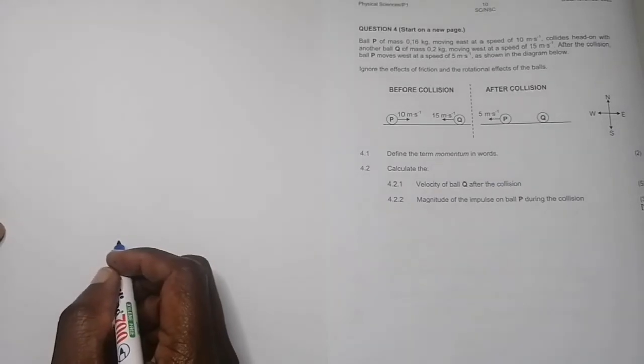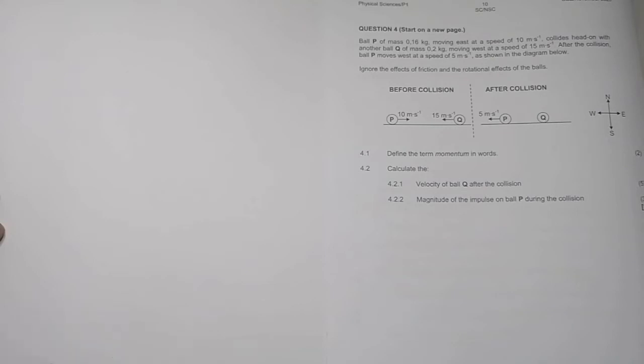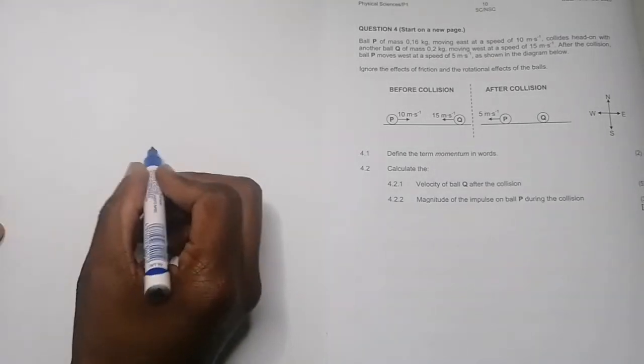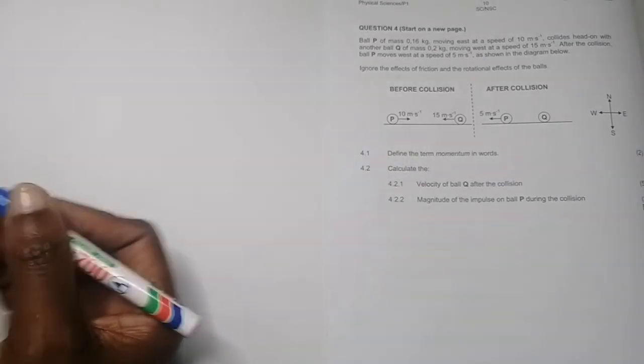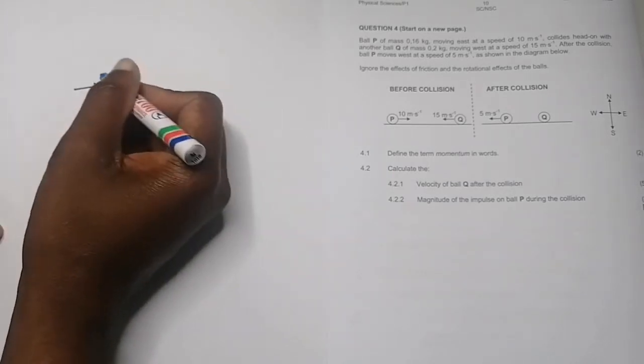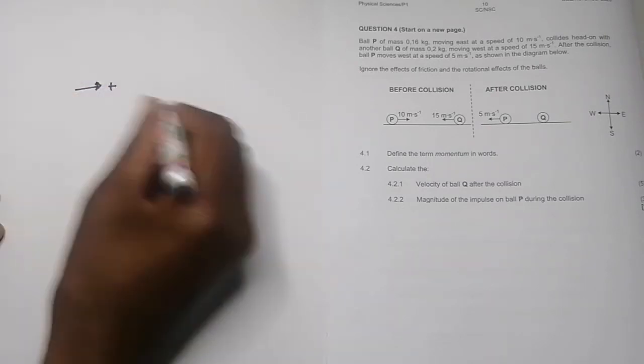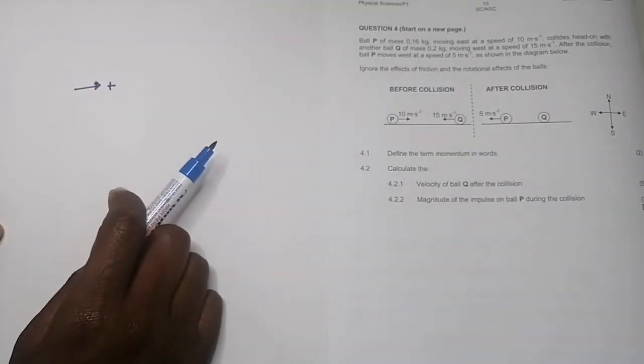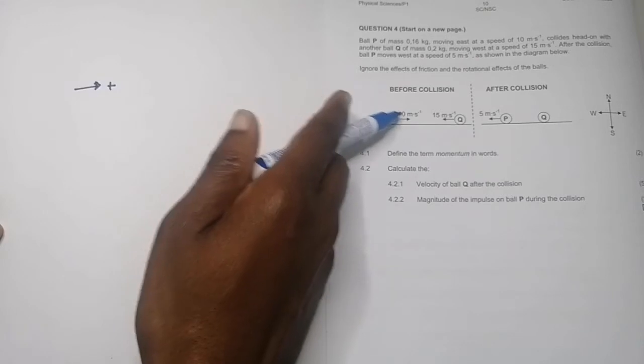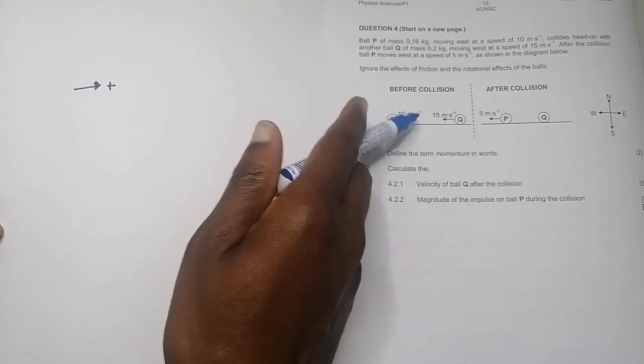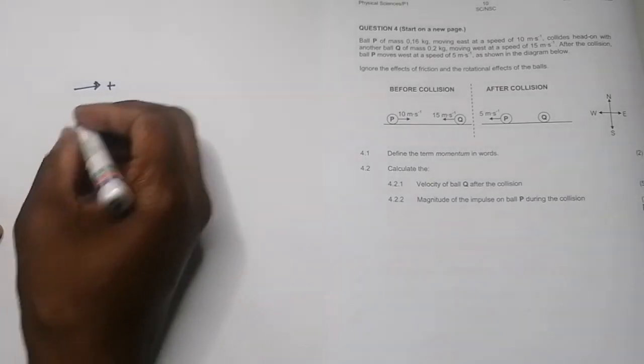They say calculate the velocity of ball Q after collision. The first thing you ought to do whenever you take a question on momentum is always get into the habit of choosing a positive direction. I'm going to assume that direction going to the right is positive, so direction to the east is positive. That means the velocity of ball P will be positive 10 meters per second, and to the west will be negative 15.